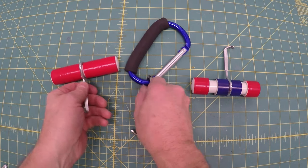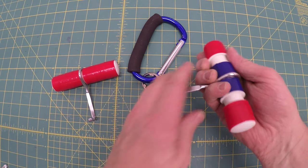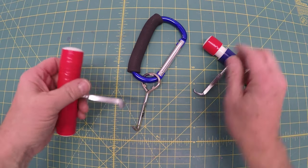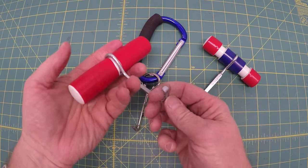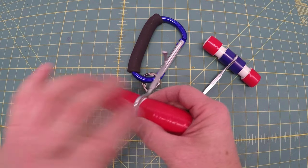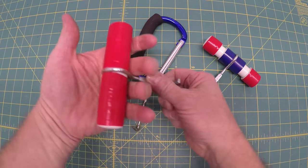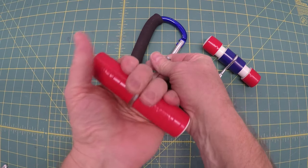Today we're making not one, not two, but three different styles of lace tighteners or lace pullers. These work great for inline skates, any kind of shoes where you have laces, especially if you're an older person or with arthritis.